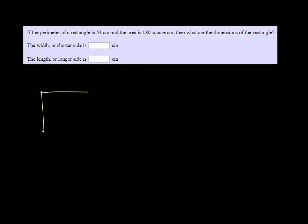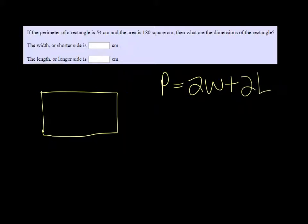Alright, so we know what a rectangle looks like, and perimeter simply means to add up all the sides. So perimeter is 2w plus 2L. And we also know that the area is 180, and area is length times width.